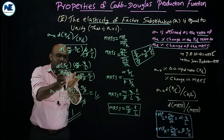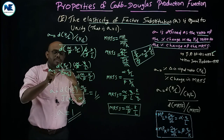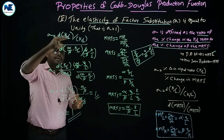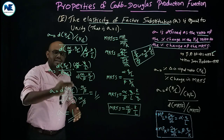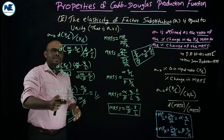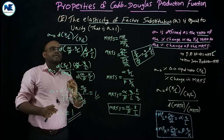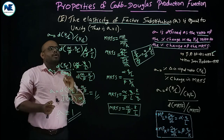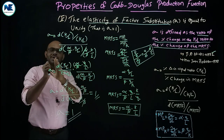So under the Cobb-Douglas production function, the elasticity of factor substitution is equal to unity, that is σ = 1. This is an important separate five-mark topic — revise and practice it.